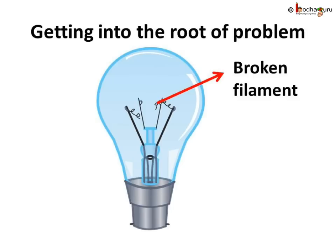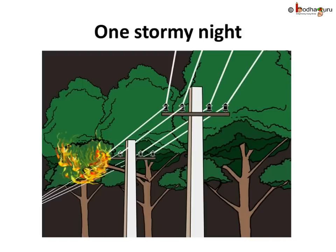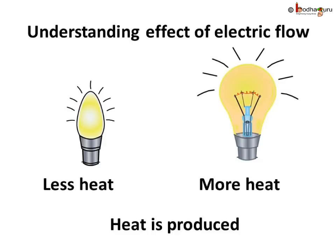But now the question is: how did the filament get broken? No one hit the bulb — who or what did it? Remember, it stopped working since the electric sparks appeared on the wires outside the home during the storm. Electric sparks mean something bad happened in the wires. If you come close to a glowing bulb, you would feel the heat.